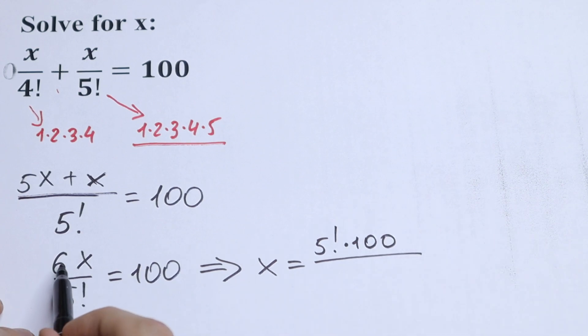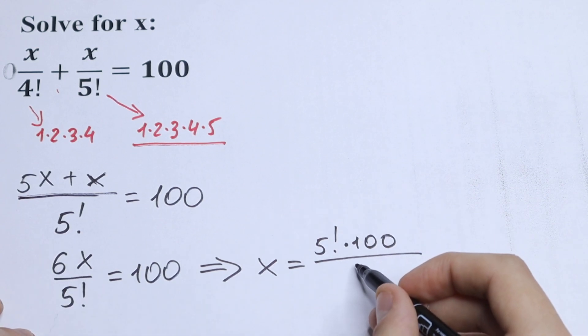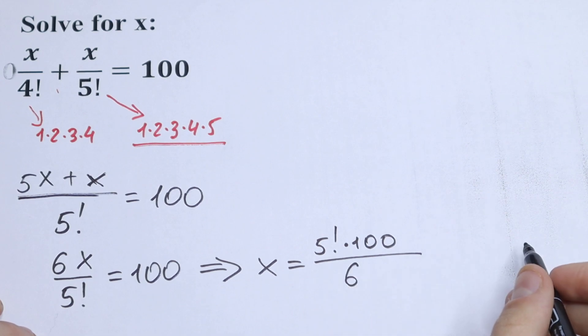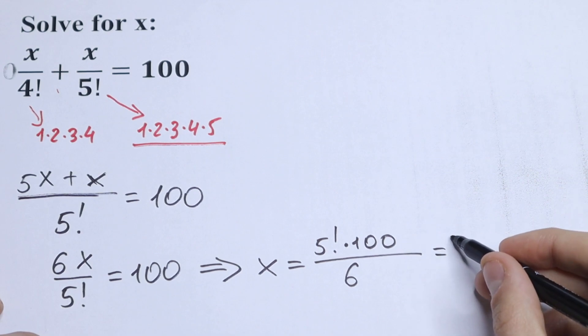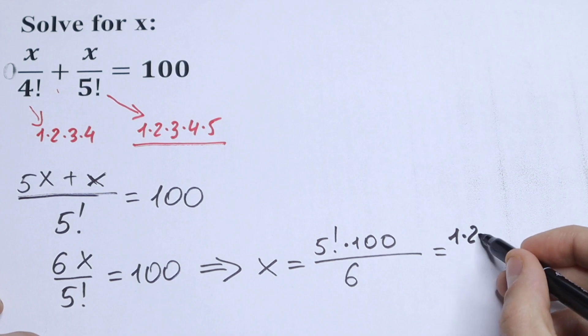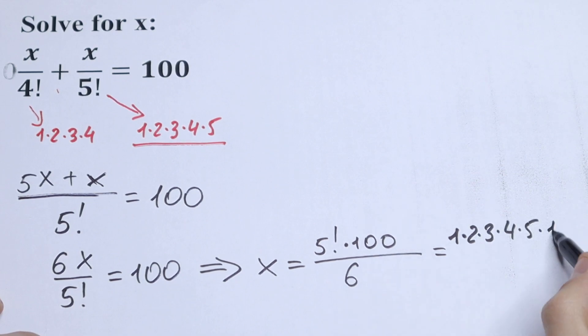Let's simplify this. Let's write this product. 5 factorial is a product from 1 to 5: 1 times 2 times 3 times 4 times 5, multiplying by 100.